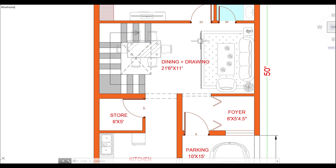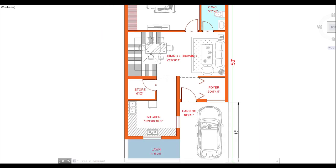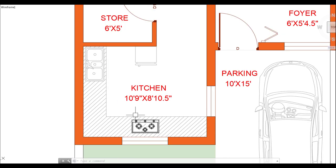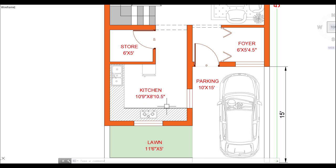You can also put your sofa here and use it comfortably. Then we will go to the kitchen. I have put a partition there. The kitchen is 10 feet 9 inches by 8 feet 10 inches, with 5 inches below. It is a good, very big, and very open kitchen.